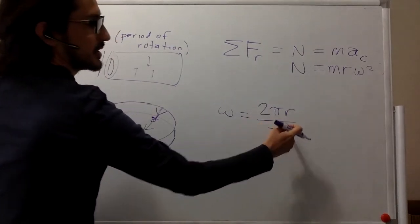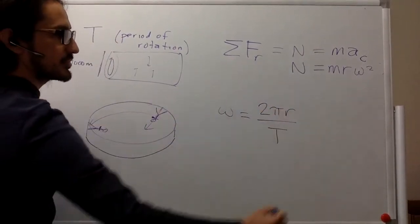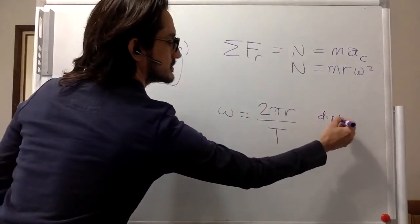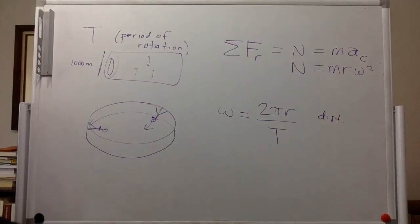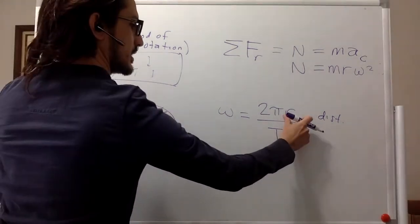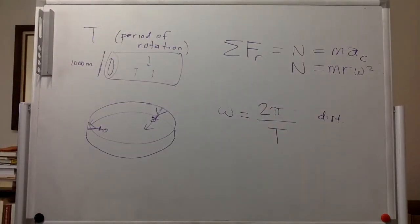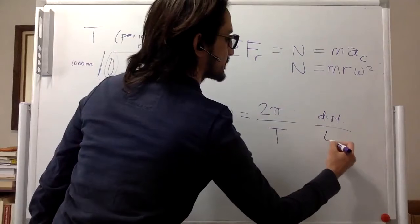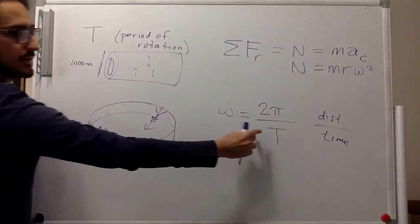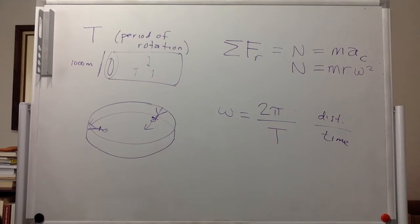Okay. So this is the distance, right, that it's going through. And this is, sorry, this is just 2 pi. Yes, just 2 pi, because this is in radians. So the radial distance divided by the time. Okay. So one rotation in time. So that is the definition of the period.